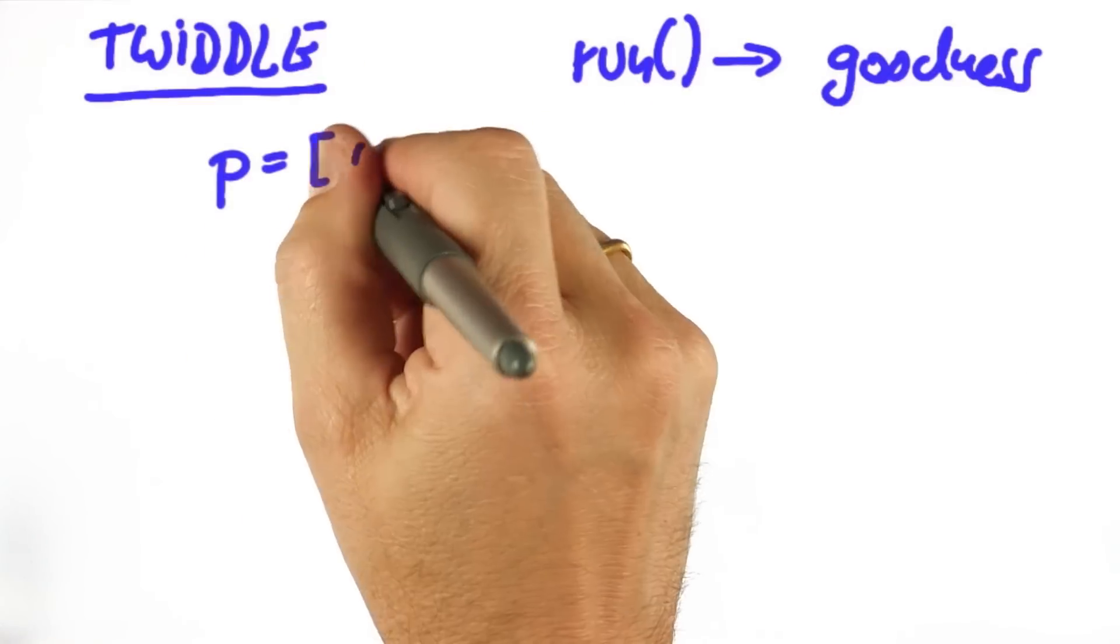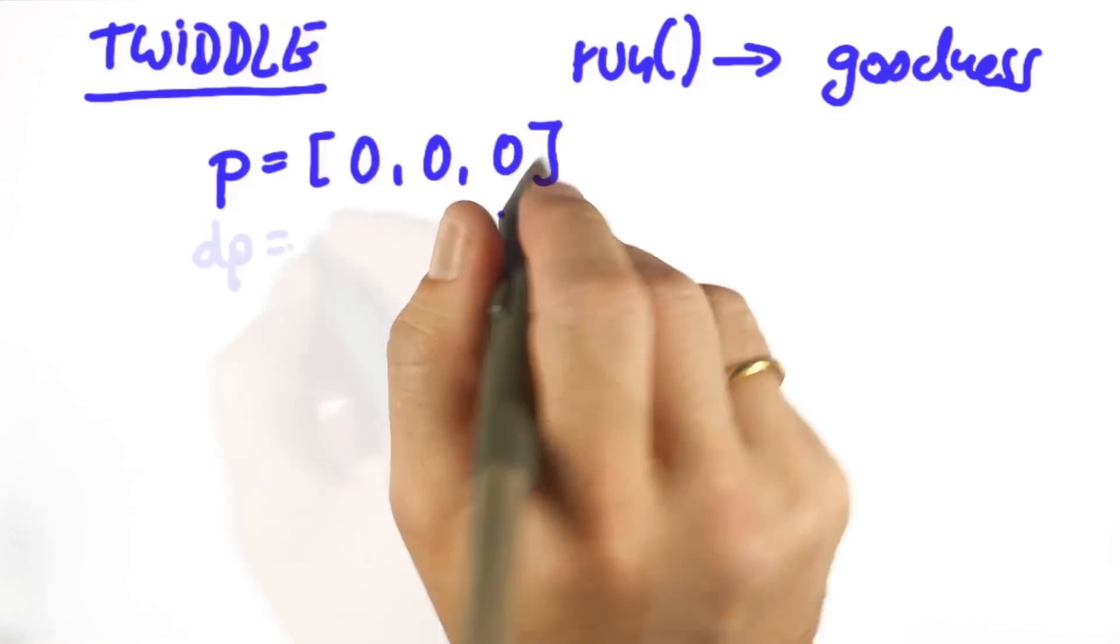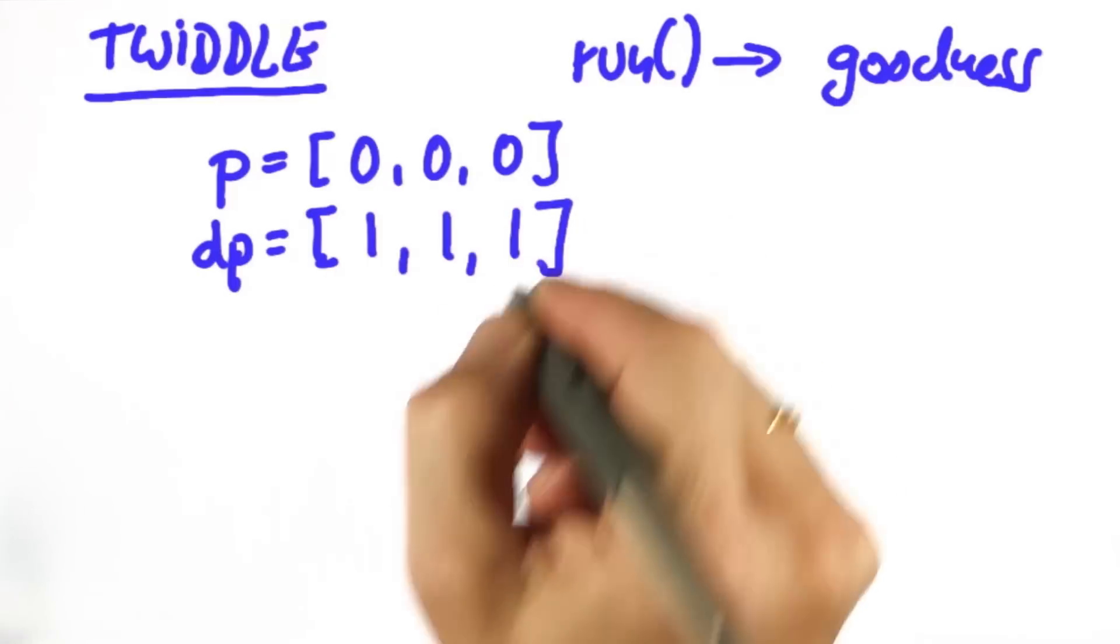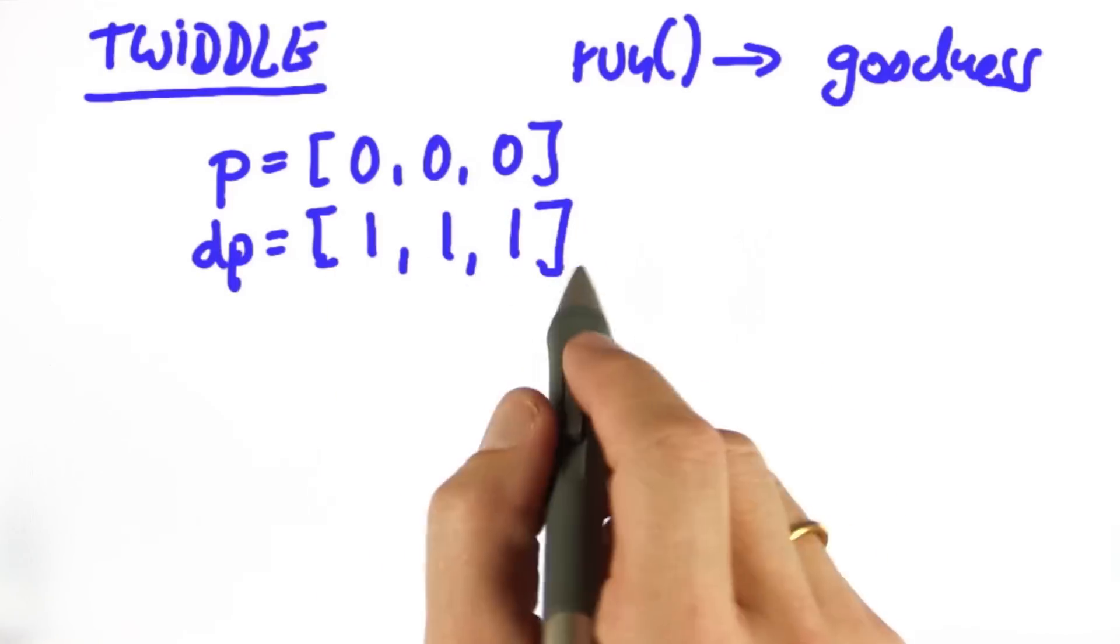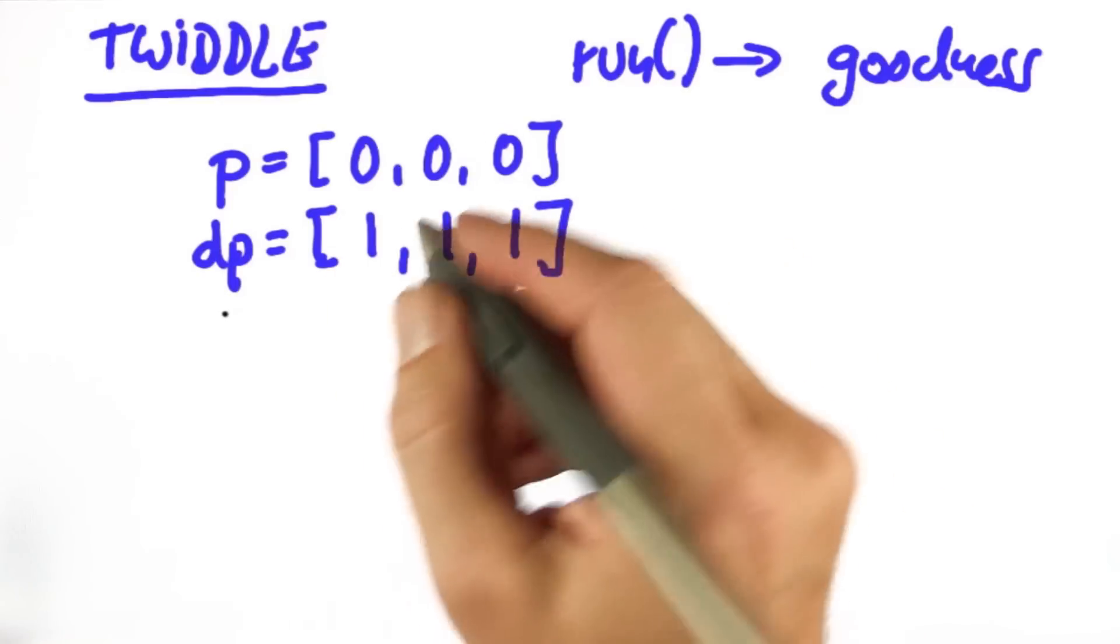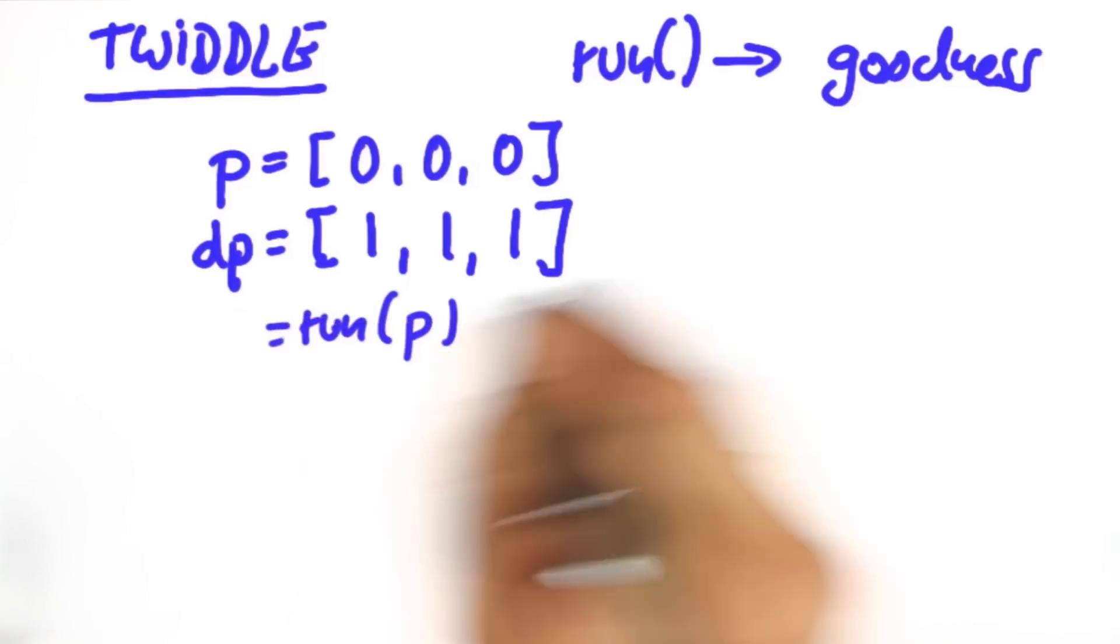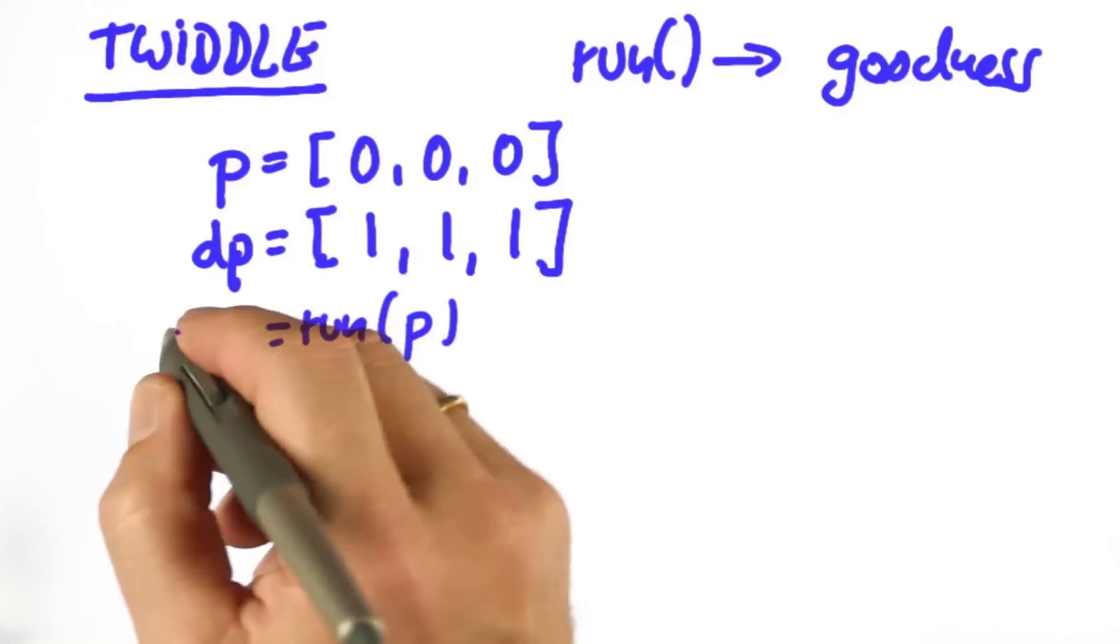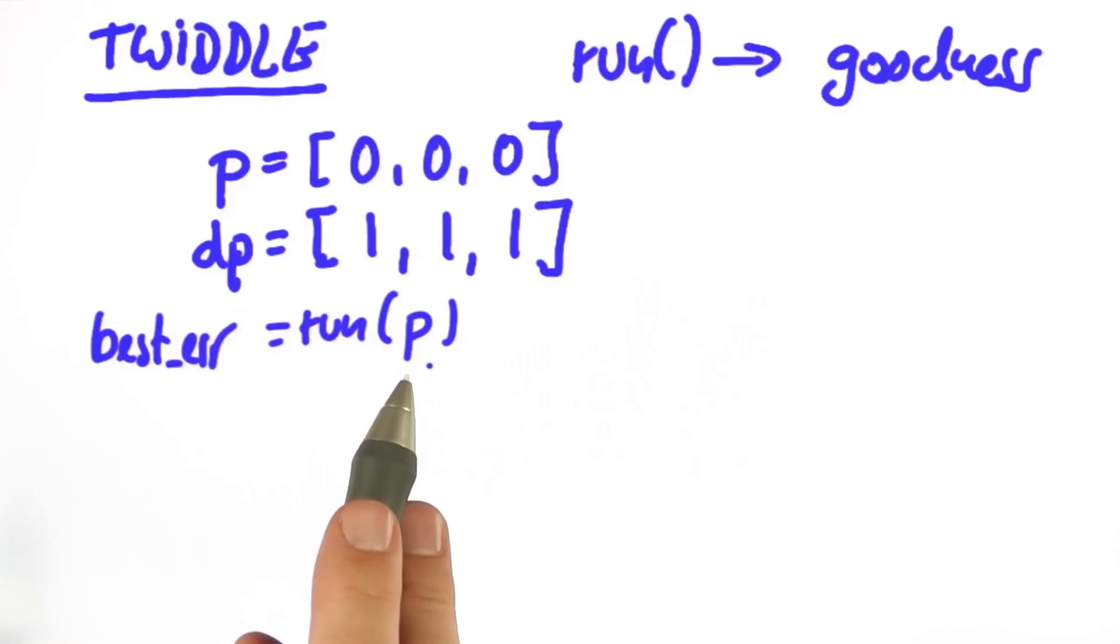So here's how Twiddle works. Build a parameter vector of our three target parameters and initialize it with zero. Also, build a vector of potential changes that you want to probe and initialize them for now with one. Then you can run our command run with our parameters, and whatever it outputs is our best error so far. Now we wish to modify p as to make the error smaller. And that's where Twiddle comes in.